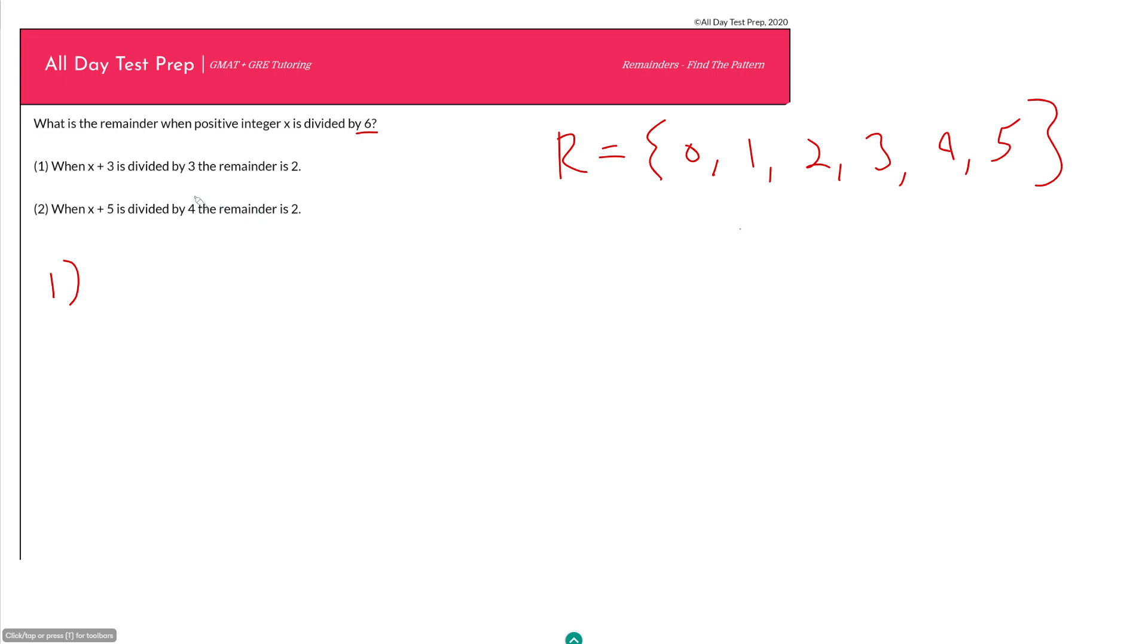Statement one says when x plus 3 is divided by 3, the remainder is 2. So here they're saying that x plus 3, not x, but x plus 3 is equal to 3y plus 2, where y is our quotient, which means x, because ultimately we just care about x, should be equal to 3y minus 1.